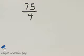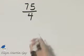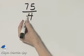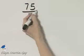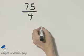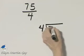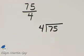Let's write this improper fraction as a mixed number or a whole number. Remember our fraction bar means to divide, so we find 75 divided by 4, or 4 into 75. So let's divide.